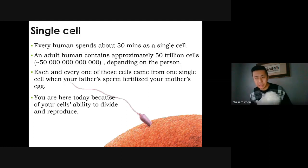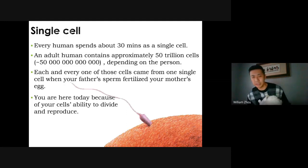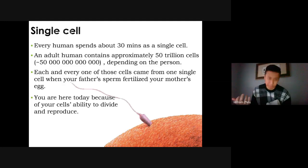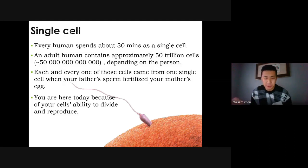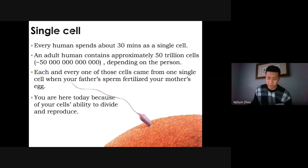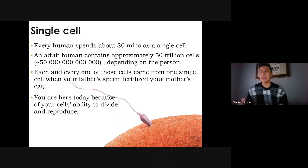We're going to learn basically just one thing today, starting with cells. Humans have trillions of cells in our body — not just billions, but trillions. A trillion is basically 12 zeros. We have around 50 trillion cells, depending on the person because some people are bigger than others, but everyone started as one cell.